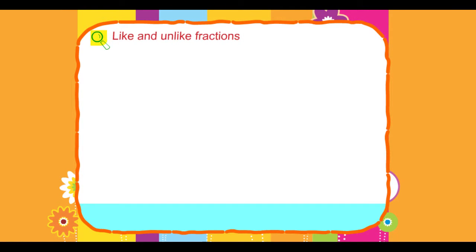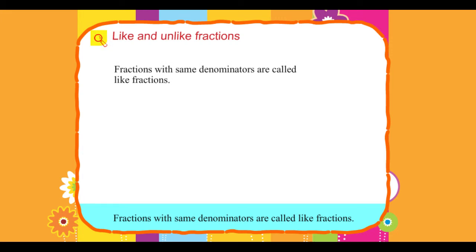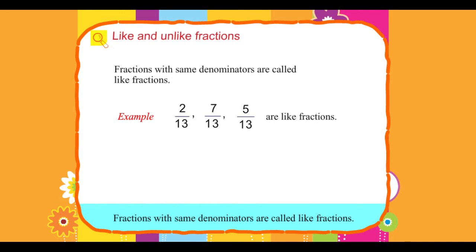Like and unlike fractions. Fractions with the same denominators are called like fractions. For example, 2 upon 13, 7 upon 13, and 5 upon 13 are like fractions.